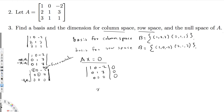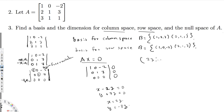From the RREF system: the first equation gives x - 2z = 0, so x = 2z. The second equation gives y + 7z = 0, so y = -7z. Writing in terms of the free variable z, we get x = 2z, y = -7z, z = z.